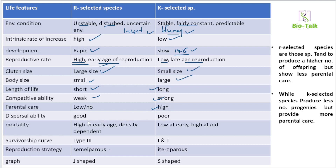Key characteristics of r-selected species include high dispersal ability and spreading capacity, high mortality, and density-independent population regulation. r-selected species tend to mature quickly and have many offspring. K-selected species, in contrast, show density-dependent regulation and invest more in fewer offspring.